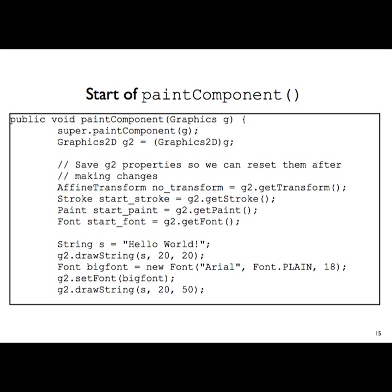Now we've got some defaults. When you set up one of these things, transformations, lines, colours, and fonts all have default values. The default transform is do-nothing. The default line is of a certain thickness, there's a standard font and standard size, and the initial colour is black on a white background. These are objects within the graphics class, so they've got set methods and get methods so we can get them and store them.